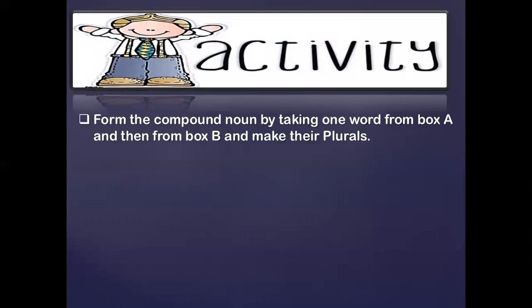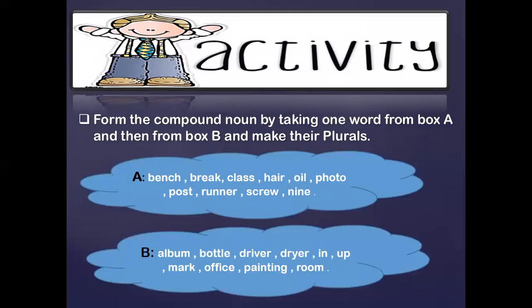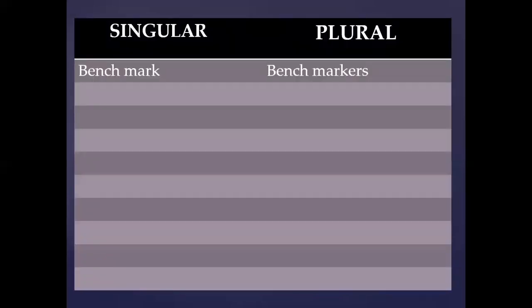Here comes the activity. Form compound nouns by taking one word from Box A and one word from Box B, then make their plurals. For example, take 'bench' from cloud A and 'mark' from cloud B — it makes 'benchmark', and the plural is 'benchmarks'.